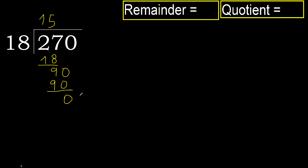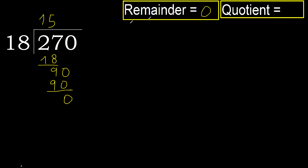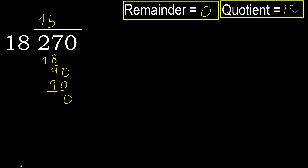There is no number, therefore finish. 270 divided by 18 is here.